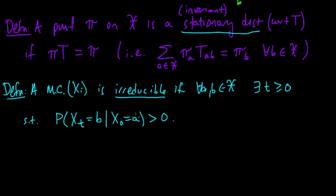In other words, no matter what state A we start out at and no matter what state B we're trying to reach, eventually there's some positive probability that we'll get there. This isn't saying we definitely will, but that with some positive probability, at some time, we will get to B. So there's at least a positive probability of it happening.